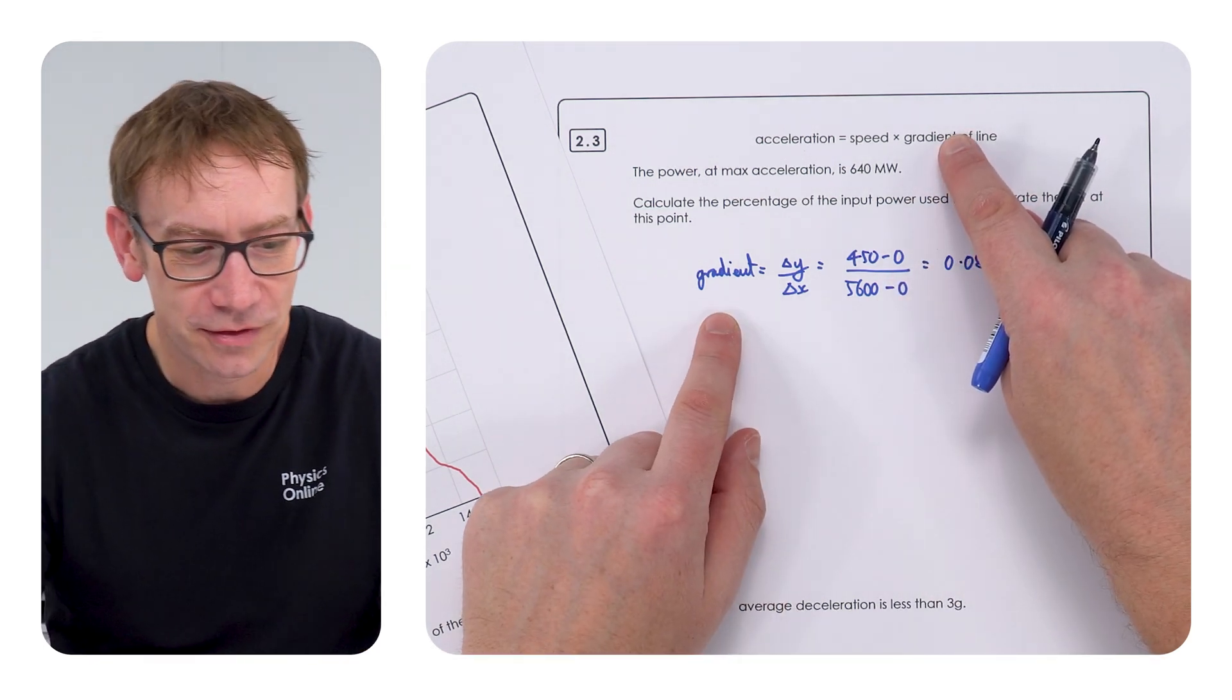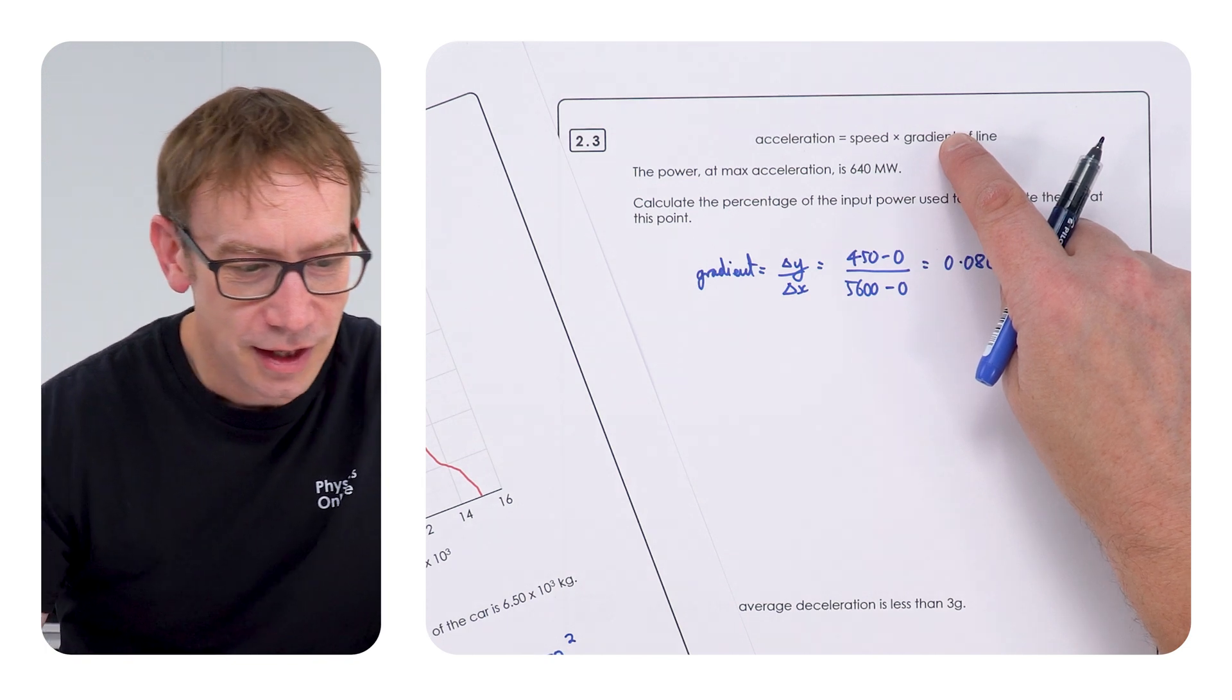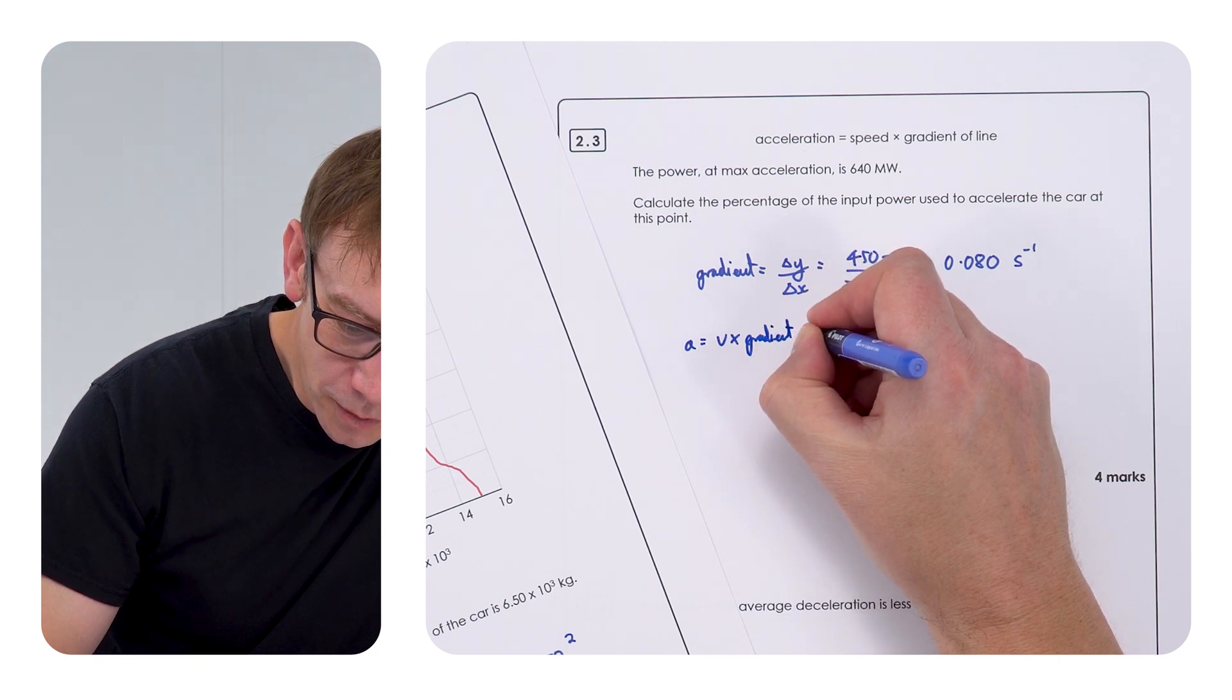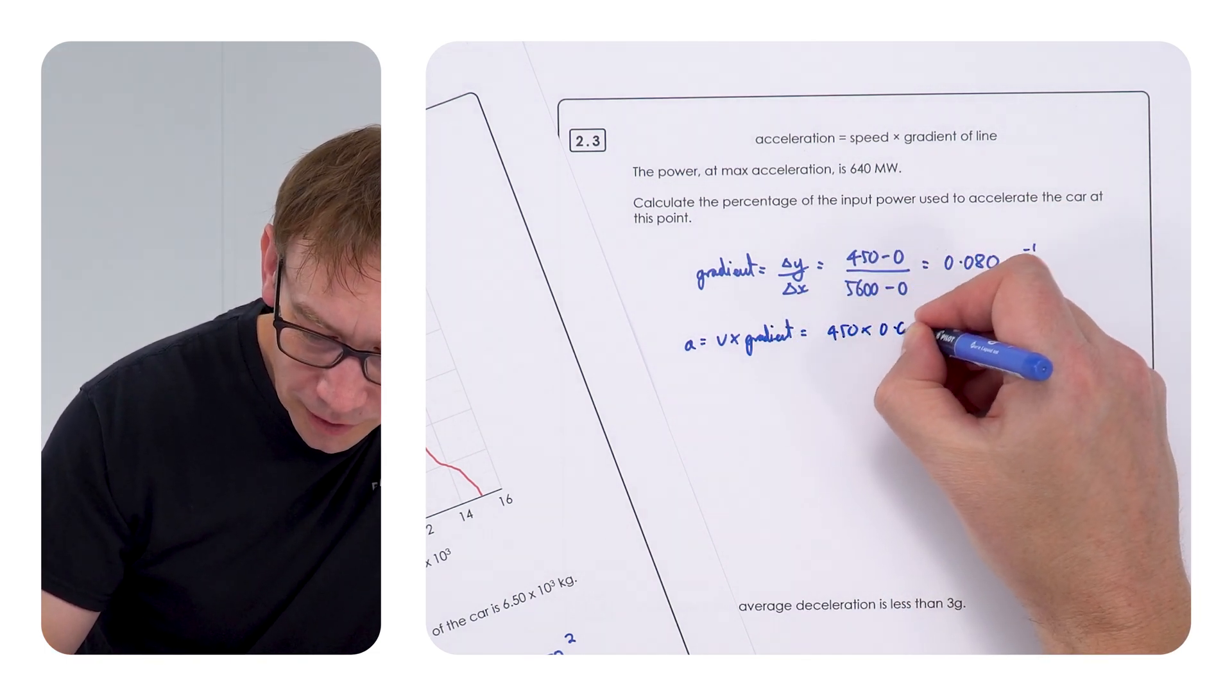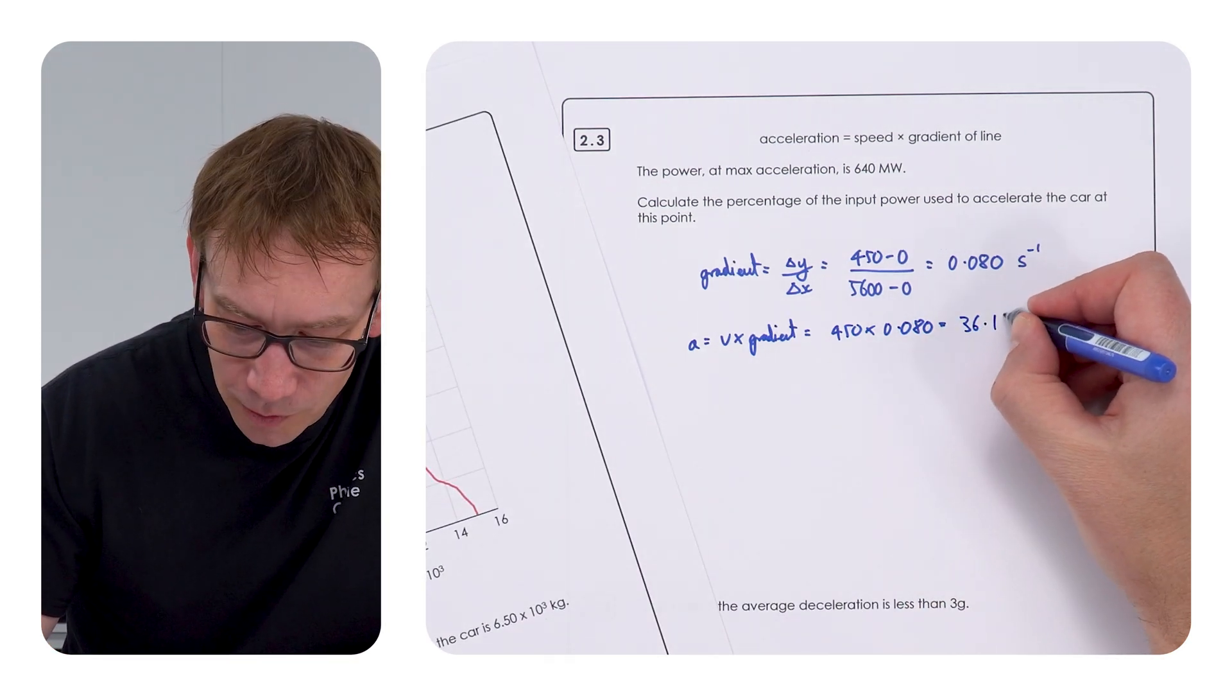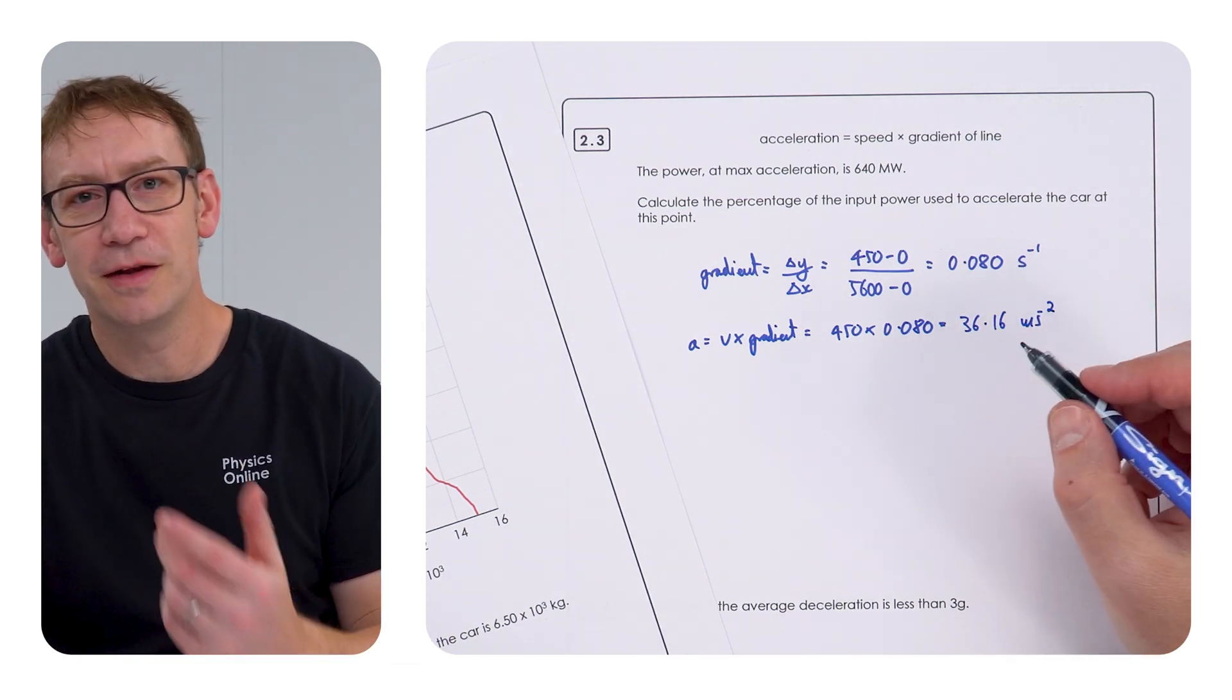Now then we need to work out our acceleration. And that's just going to be equal to the speed times the gradient. And therefore, the acceleration is equal to the v, the speed times the gradient, which equals 450 times 0.080, which, when you put it into your calculator, is equal to 36.16 metres per second squared. So, this is the value for the acceleration.